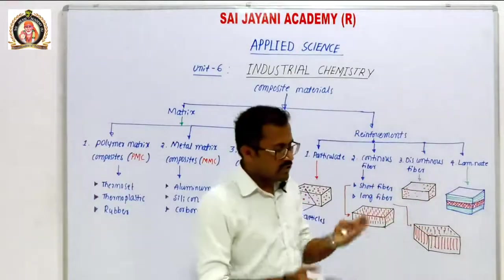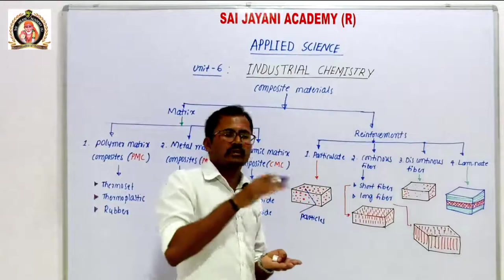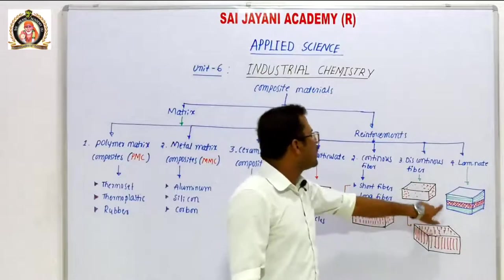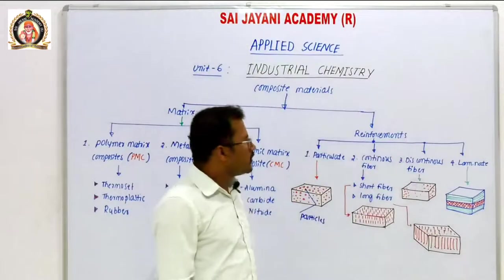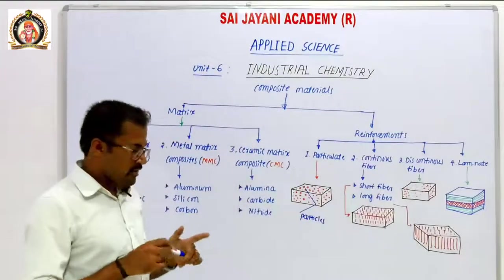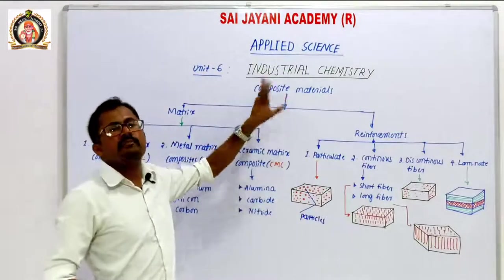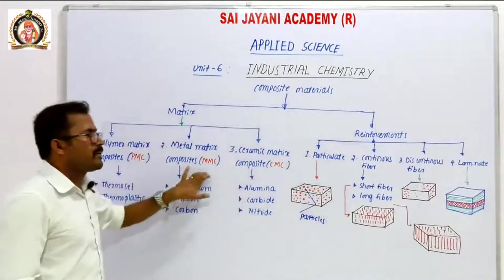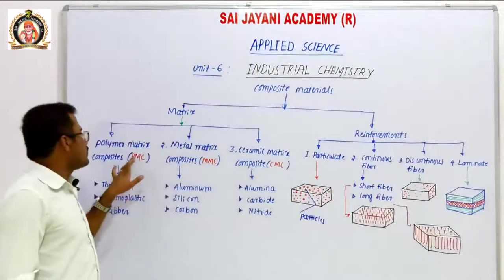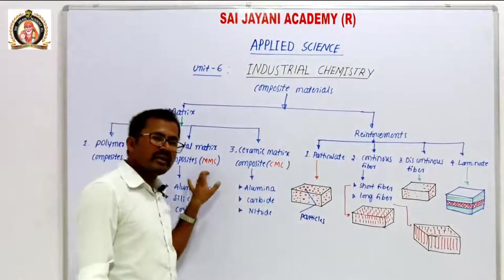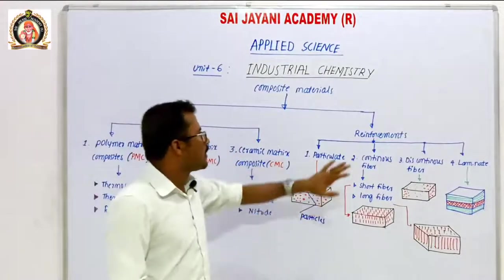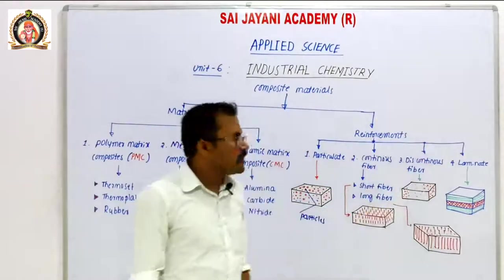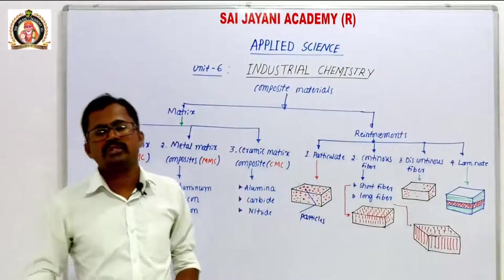The laminated reinforcement composite material uses layers as reinforcement. These are the main types of composite materials. Composite materials mainly have two elements: matrix and reinforcement. Based on matrix: PMC, MMC, CMC. Based on reinforcement: particulate, continuous fiber, discontinuous fiber, and laminate.